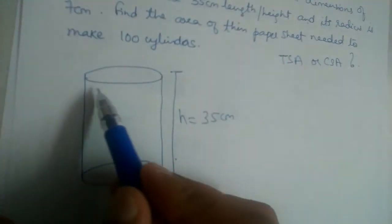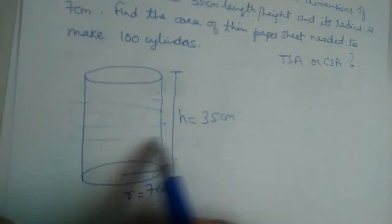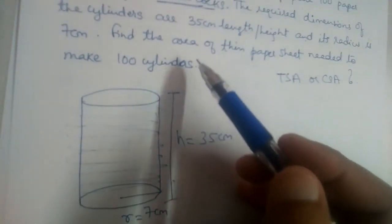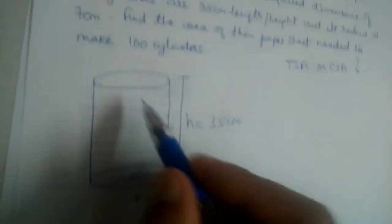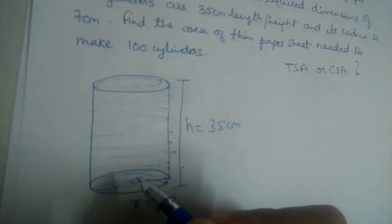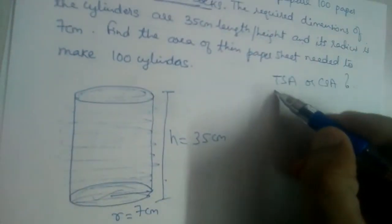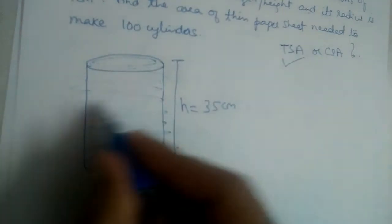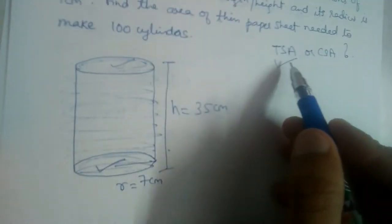We are manufacturing a cylindrical container here, because it will contain shuttlecocks. So obviously it should have a base and it should also have a cover lid. So we need to find total surface area. It will have a base, it will have the curved part, and it will also have the lid. So we need to find total surface area.